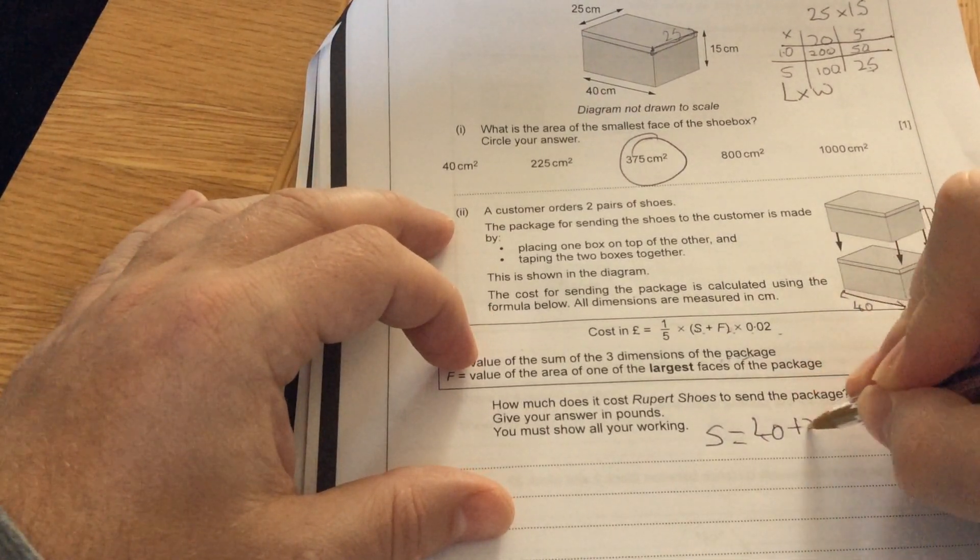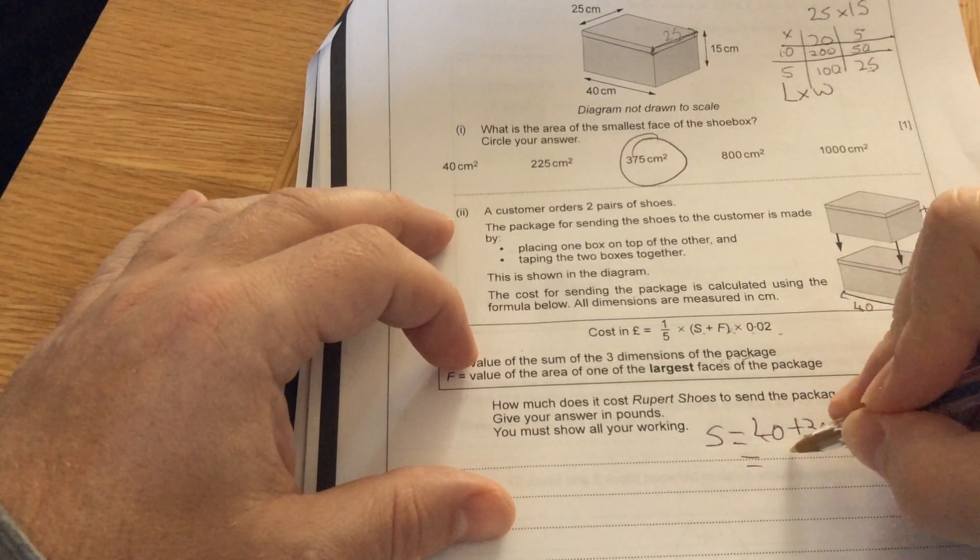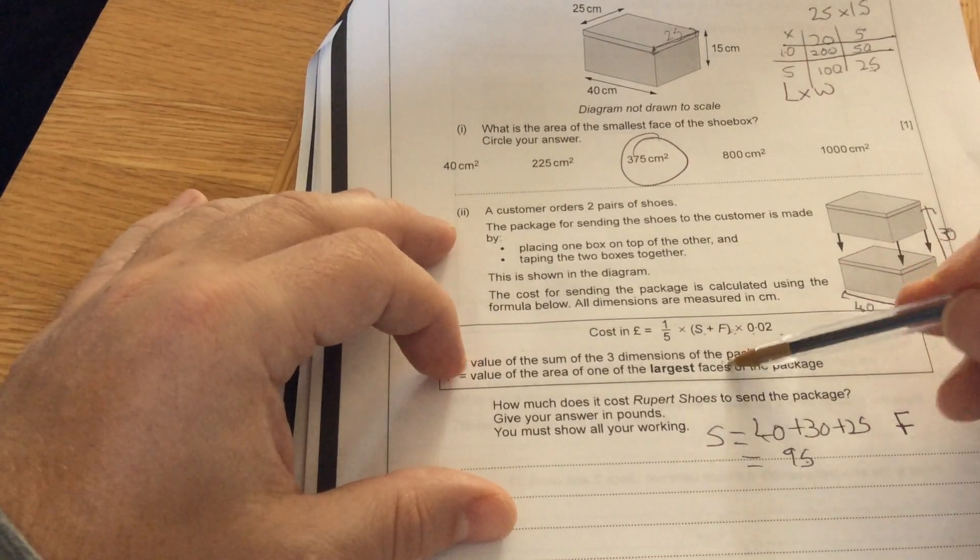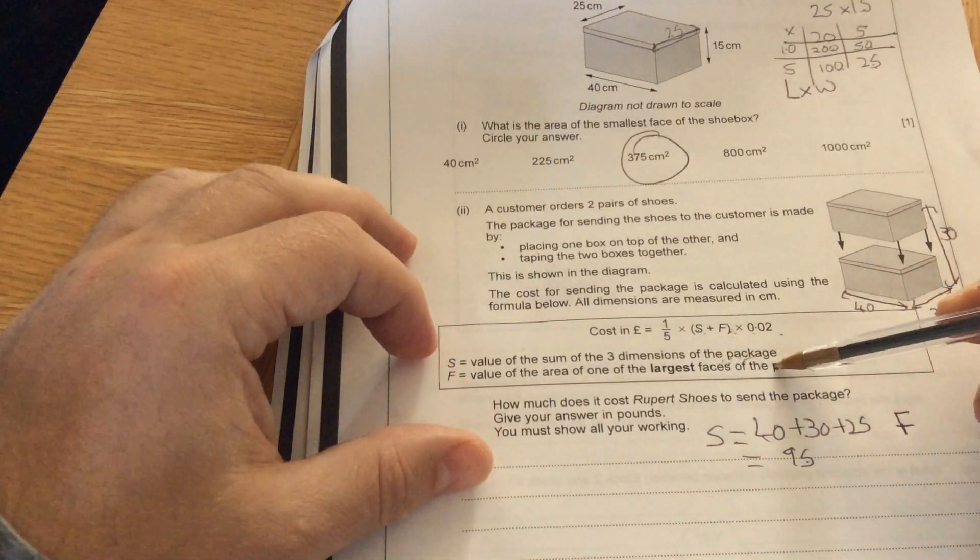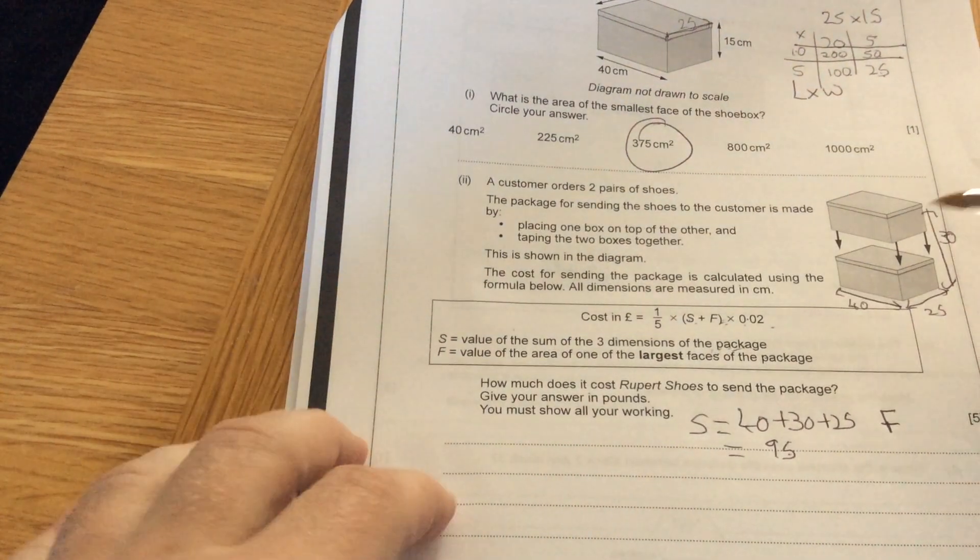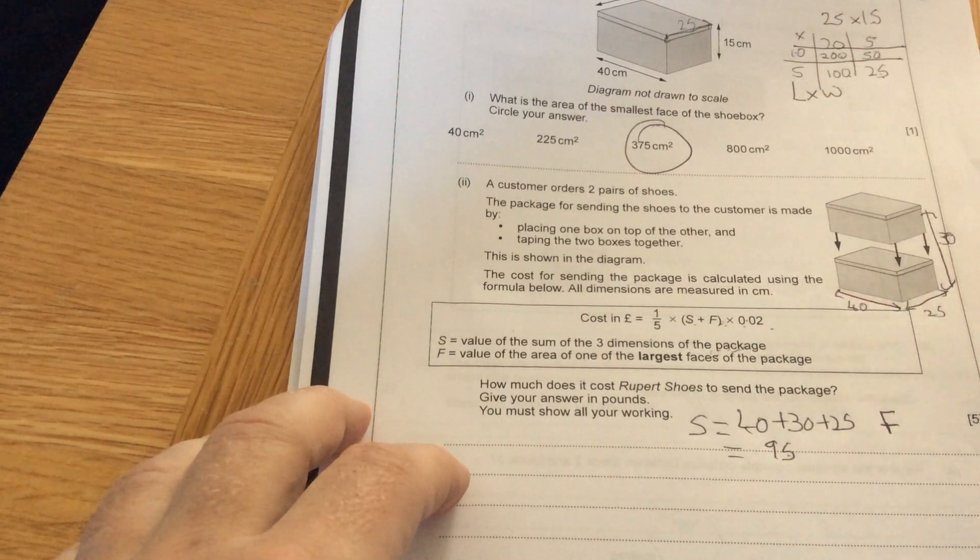So S is 40 plus 30 plus 25, which is 95. F is the area of one of the largest faces of the package. The area of the largest face would be multiplying the two biggest numbers together: 40 times 30.